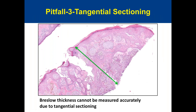Pitfall 3: tangential sectioning. You can recognize a tangential section when squamous epithelium — which should be at the top of the specimen — appears in the middle of the section. This indicates the tissue was cut tangentially. In these cases, you cannot accurately measure tumor thickness and should state that tumor thickness cannot be measured accurately due to tangential sectioning, and designate the case as TX.